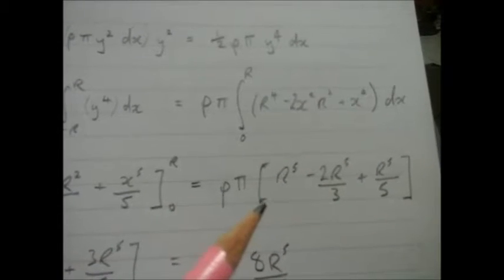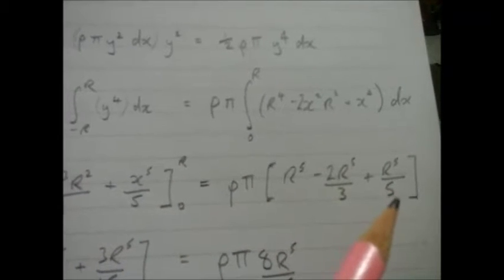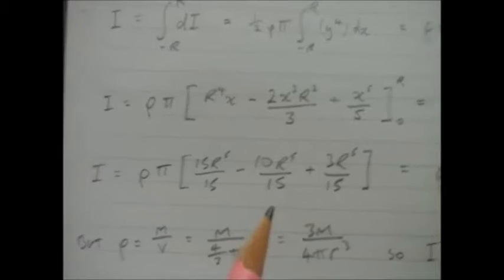I end up with this, all in terms of r⁵. You can see we've got three fractions up there with the lowest common denominator of 15, so I'll do that and I get this. I can see all that'll add up to 8r⁵ over 15.